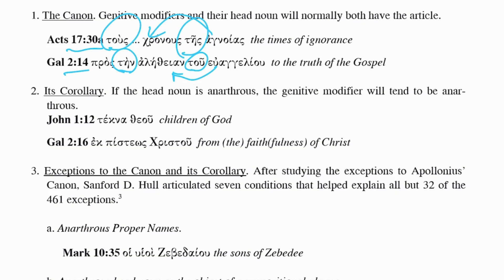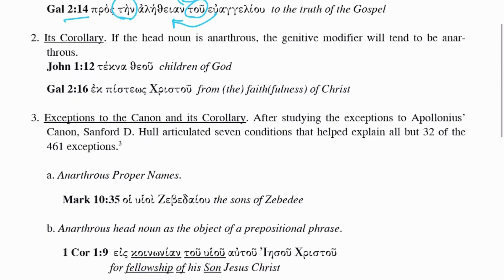The corollary is that if the head noun is anarthrous — that is, has no article — the genitive modifier will also be anarthrous. So from John 1:12, tecna teiu, 'children of God' — both are anarthrous. And then we have Galatians 2:16, ek pisteos Christu, 'from faith' or 'faithfulness of Christ.'